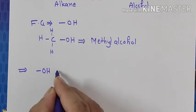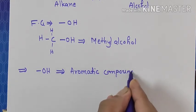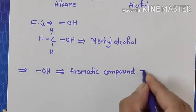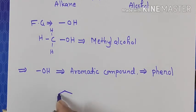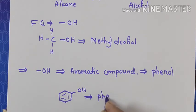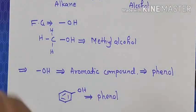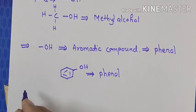When the OH group is attached directly to an aromatic compound, we do not call it alcohol — we call it phenol. So we must understand: when OH is directly attached to R or some saturated carbon atom, only then we call it alcohol. When OH is directly attached to the benzene ring, it will be termed as phenol. But there is one more class — aromatic alcohol.